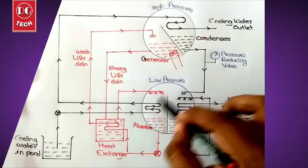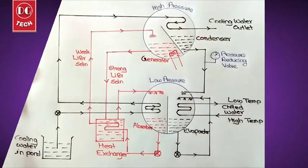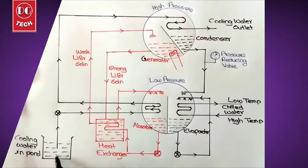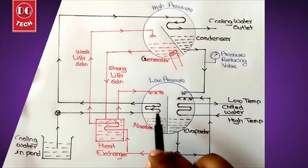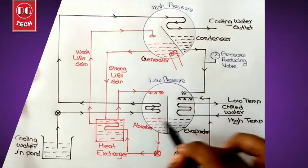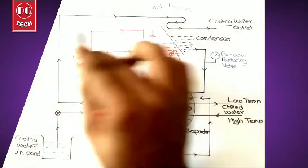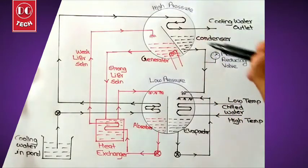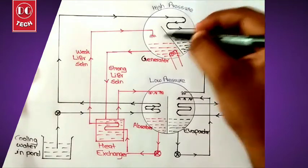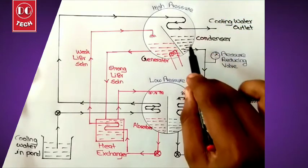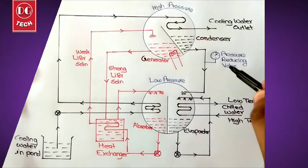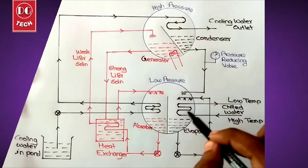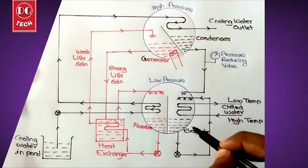The strong lithium bromide then passes through this pipe and gets sprinkled into the absorber. Cooling water from a pond is pumped to the absorber and condenser to reduce temperature. The water vapor from the generator gets condensed in the condenser, and the resulting water passes through a pressure-reducing valve to drop from high pressure to low pressure, reducing its temperature so we get cooled water, which is then passed through the evaporator.